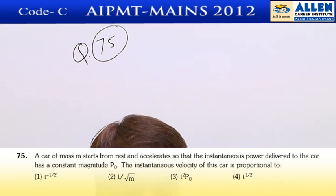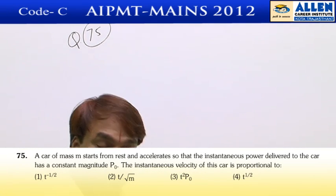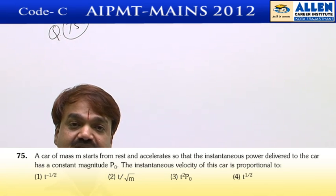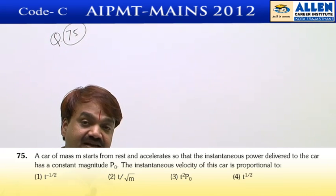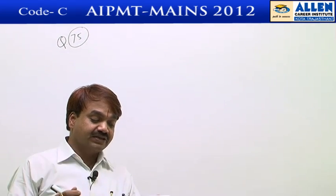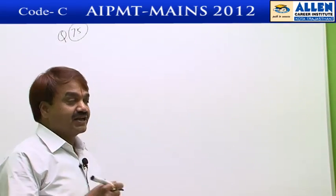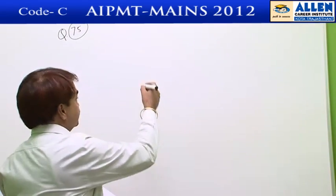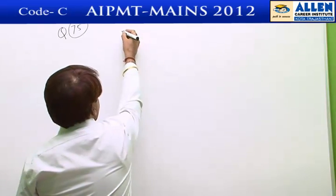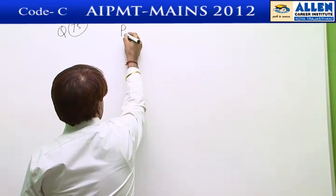Question number 75. According to the question, a car of mass m starts from rest and accelerates so that the instantaneous power delivered to the car has a constant magnitude P naught. We know that power is constant.